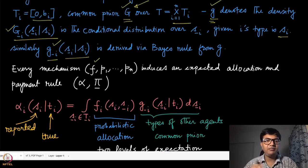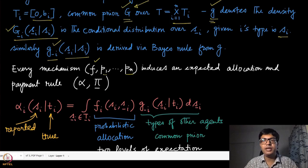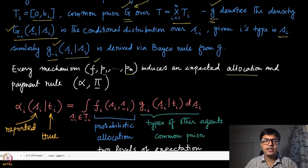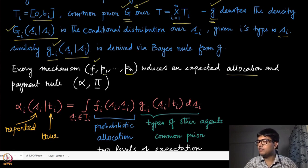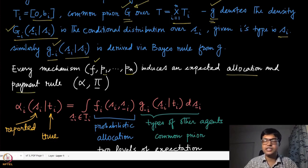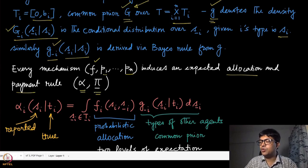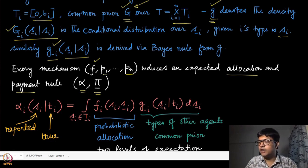Every mechanism is again a mapping on the type profile into an allocation, which could be a probabilistic allocation, along with the actual payments made after realization of types. This induces an expected allocation: when agent i does not know the types of the other players, it can only predict the allocation in expectation. We define the expected allocation and expected payment according to the common prior G with density g, denoted by α and π.